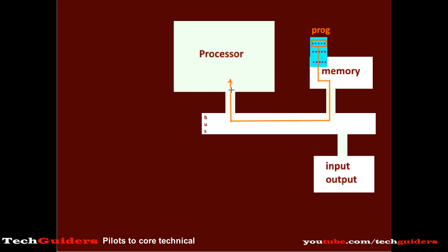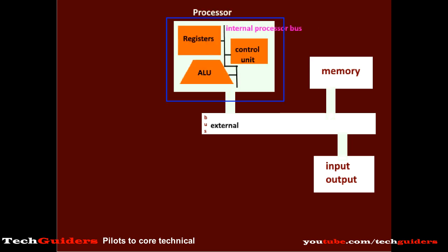In order to execute a specific task, the corresponding program is kept in the main memory and the processor executes it by fetching individual instructions into the processor. For the processor to fetch and execute the instructions, the basic components required within the processor are the register, a control unit, and an arithmetic and logic unit. These individual components are interconnected using an internal processor bus.